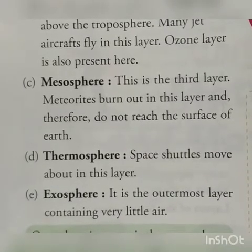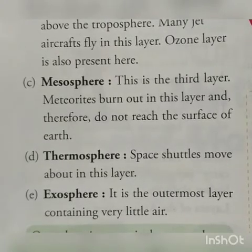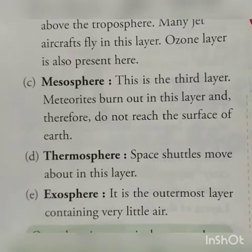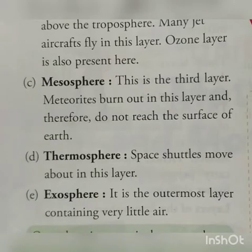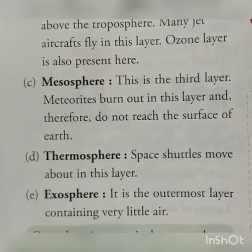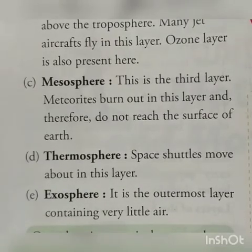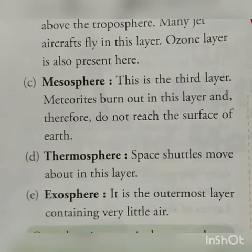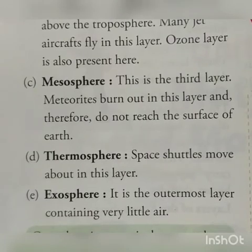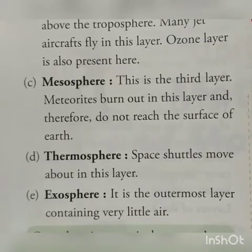The third layer is the mesosphere. Meteoroids burn out in this layer and therefore do not reach the surface of the earth. Meteoroids are objects from space, such as small rocks or pieces of metal. If they were to reach the earth's surface they could cause harm, but in the mesosphere they burn out before reaching us.